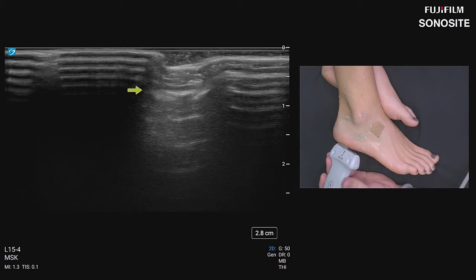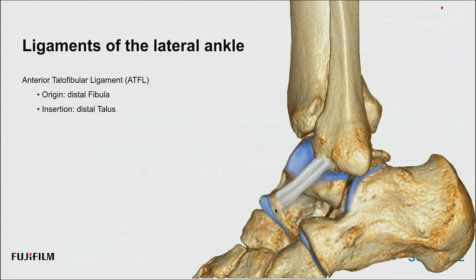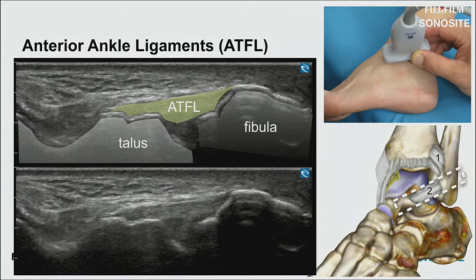Now the ankle ligaments. The ATFL originates at the distal fibula and inserts on the distal talus at a prominent tubercle. We fan the ultrasound beam over the cartilage until we see that tubercle—that's where the ligament inserts almost 100% of the time. The probe is in a slightly oblique orientation. Plant on the fibula and windshield wiper the distal portion of the probe to find it.